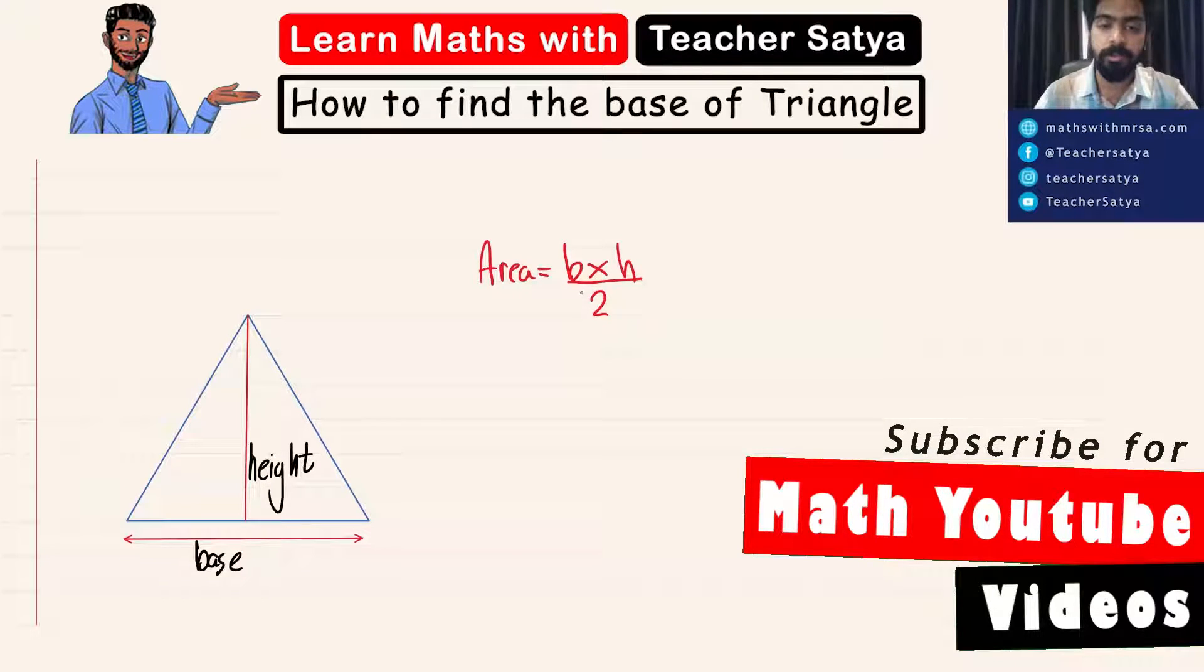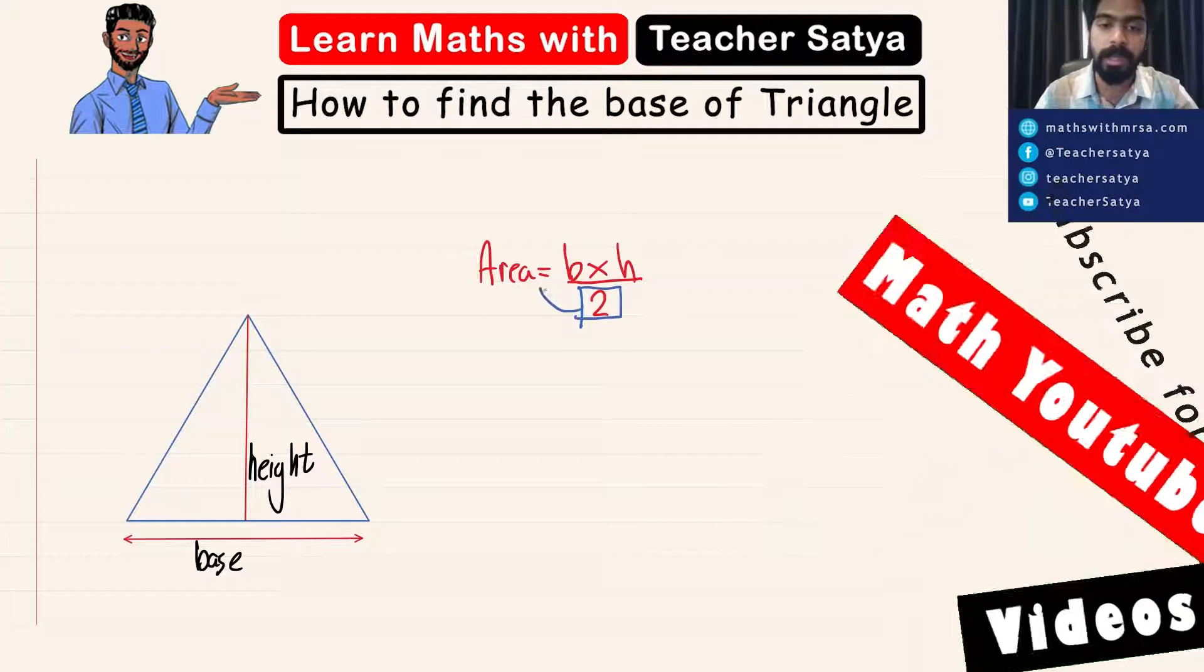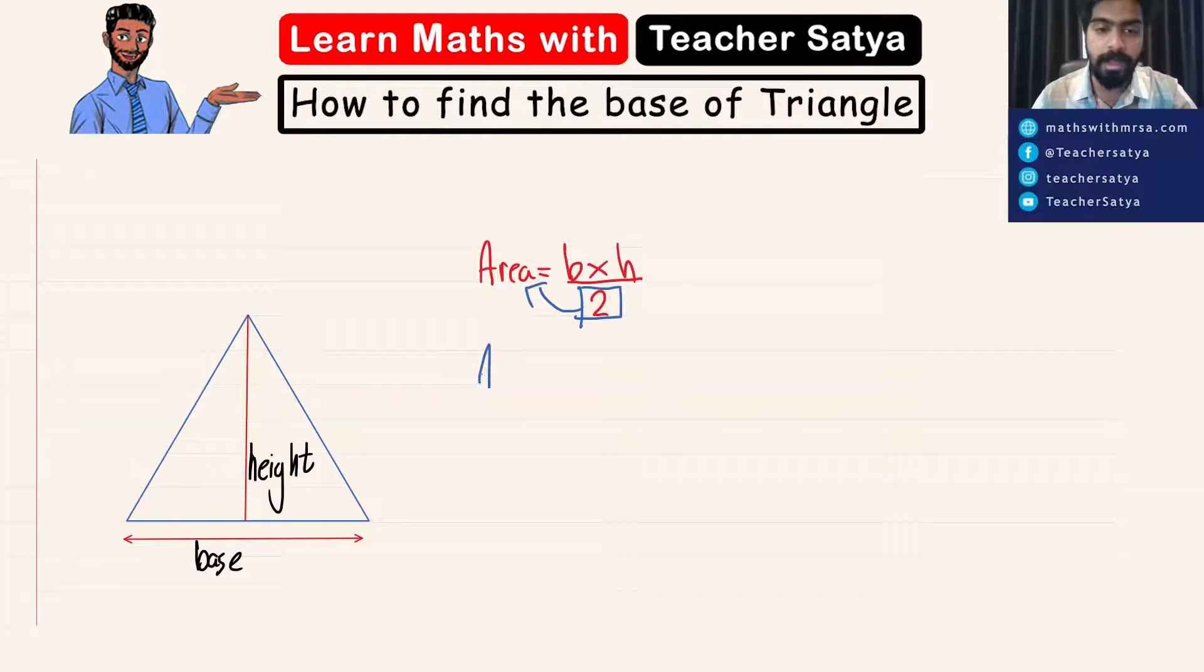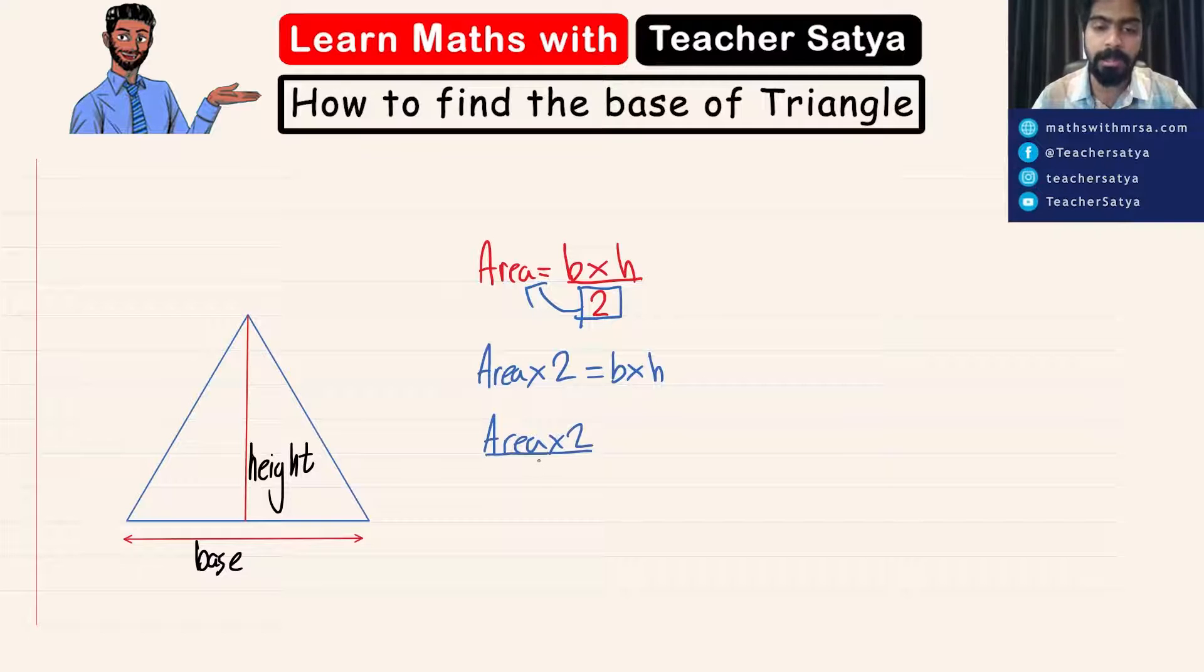Step number one: I'm going to transpose this 2 to the other side, so I will have area times 2 equals base times height. Again, I'll be solving for base, so I'm going to transpose this height to the other side, so I would have area times 2 divided by the height equals the base.